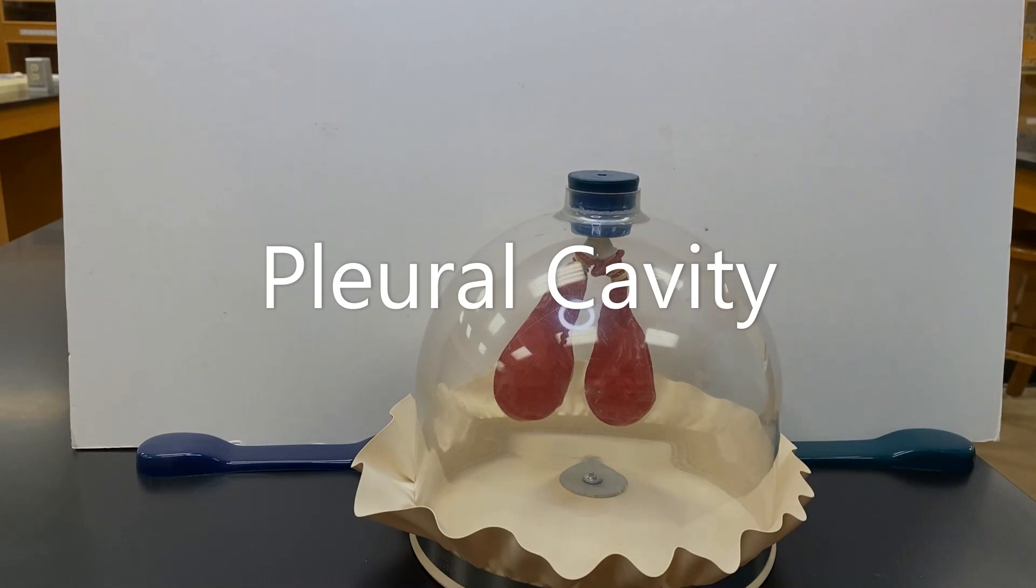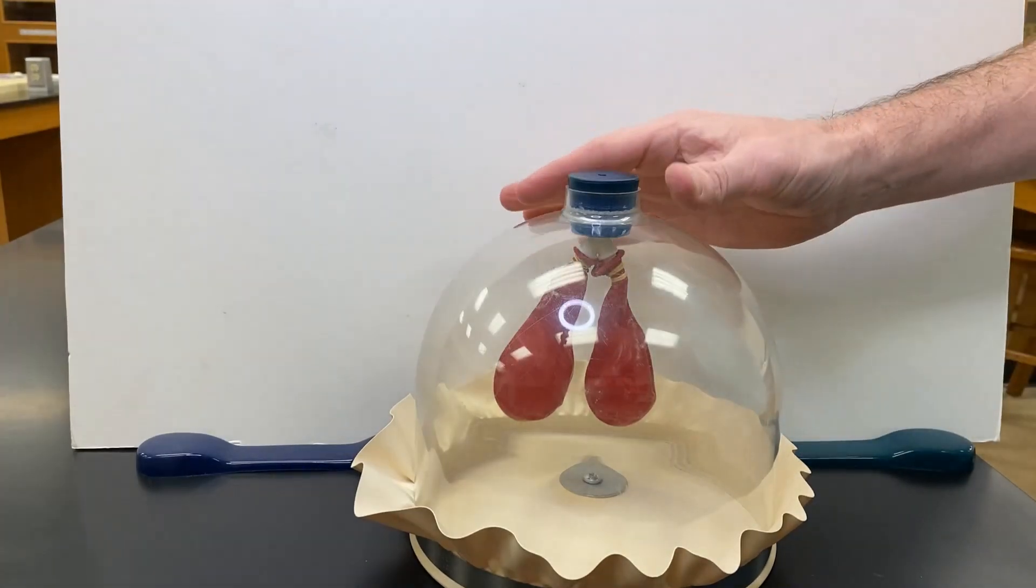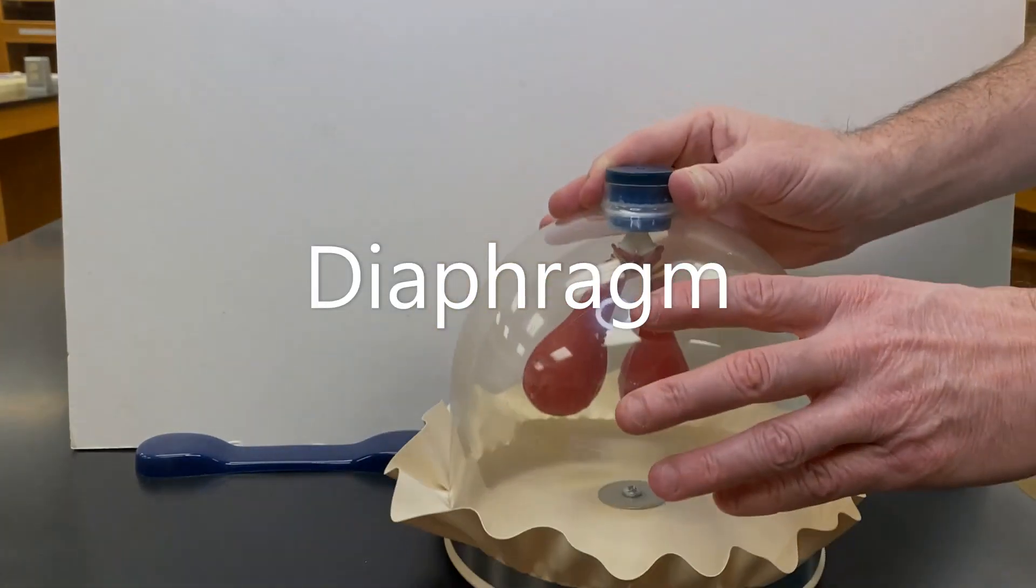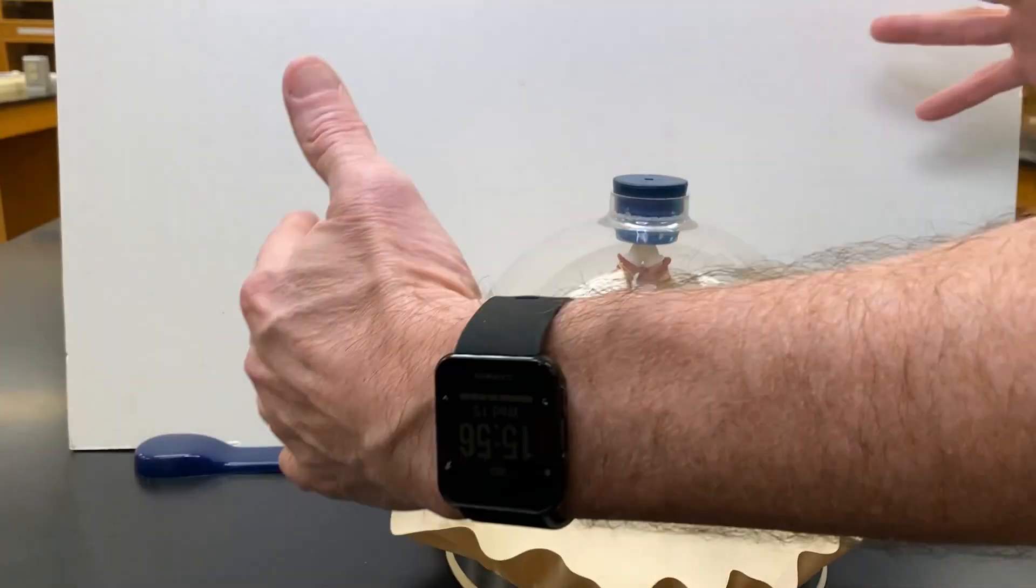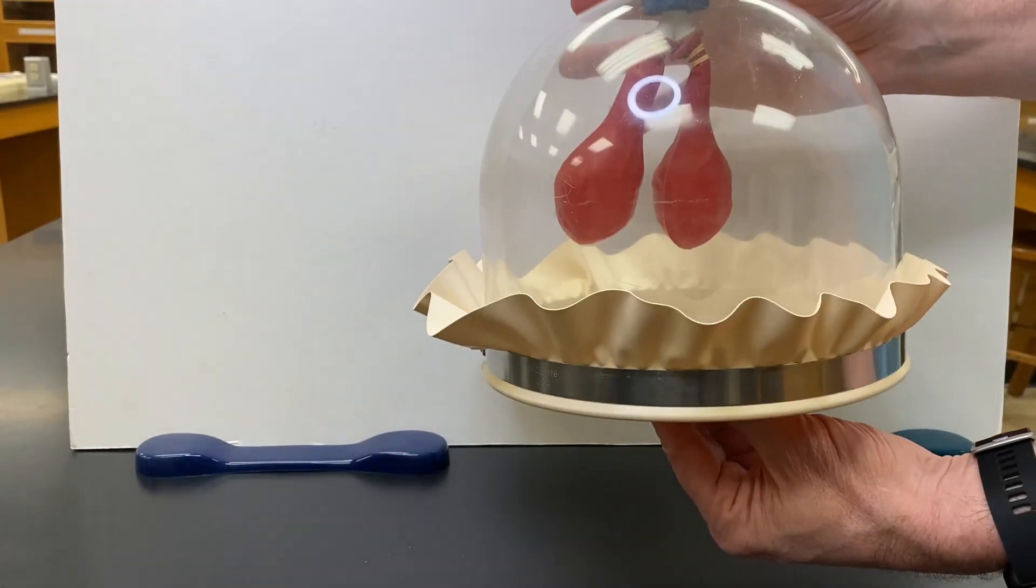In us, the pleural cavity is filled with pleural fluid, but here it's air. This rubber sheet at the bottom represents the diaphragm. Now, in a real organism, the ribcage expands when you inhale, but here we're just going to drive it with the diaphragm.